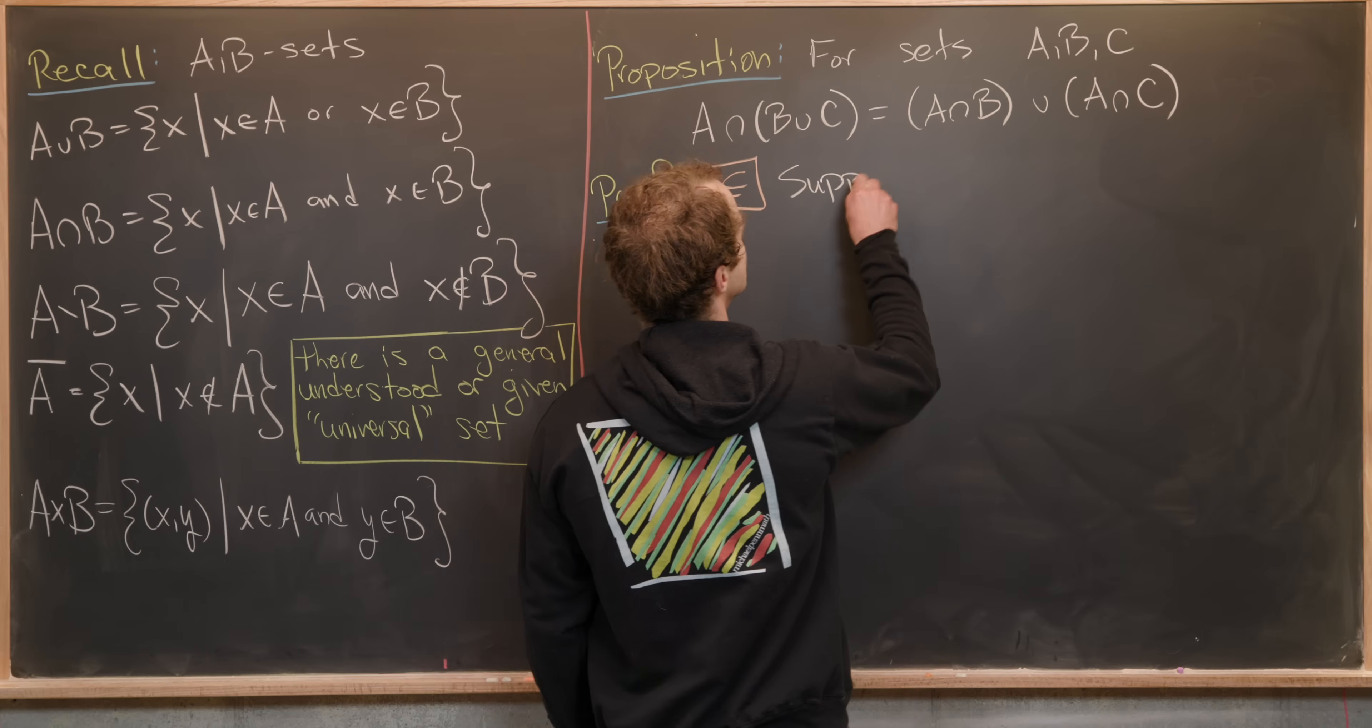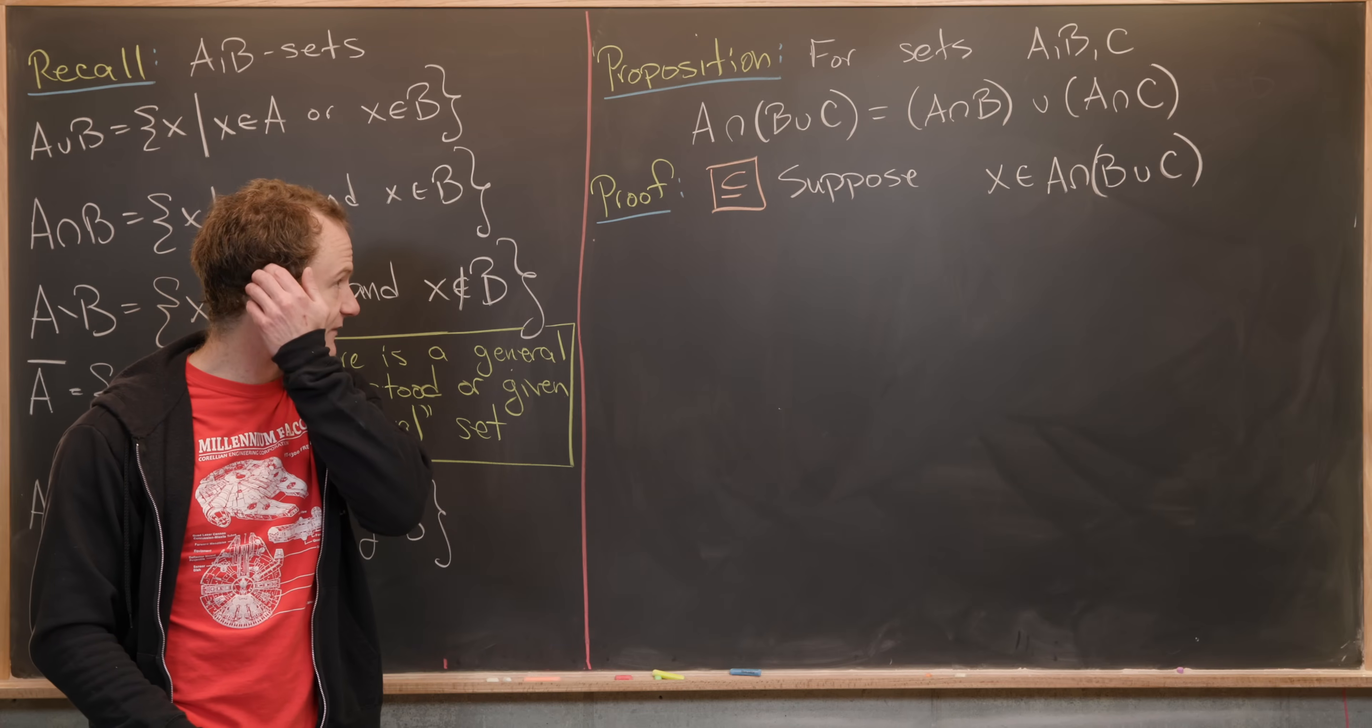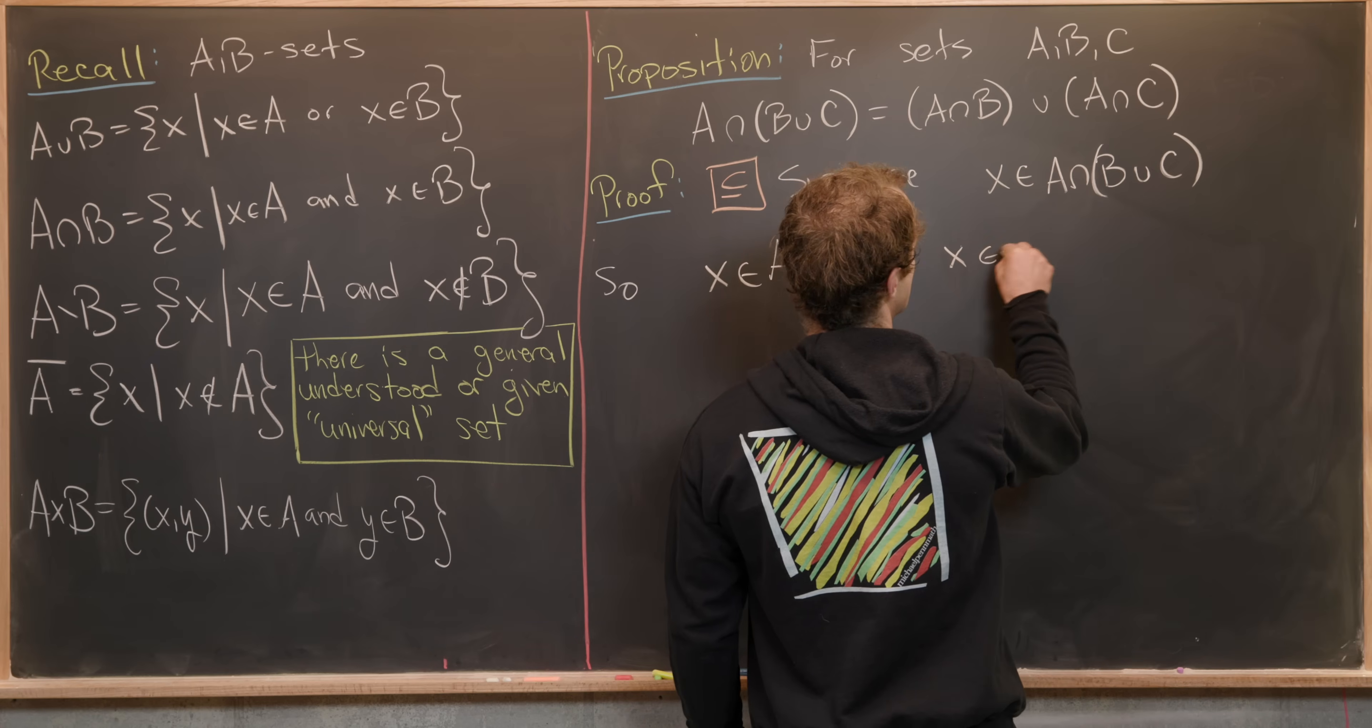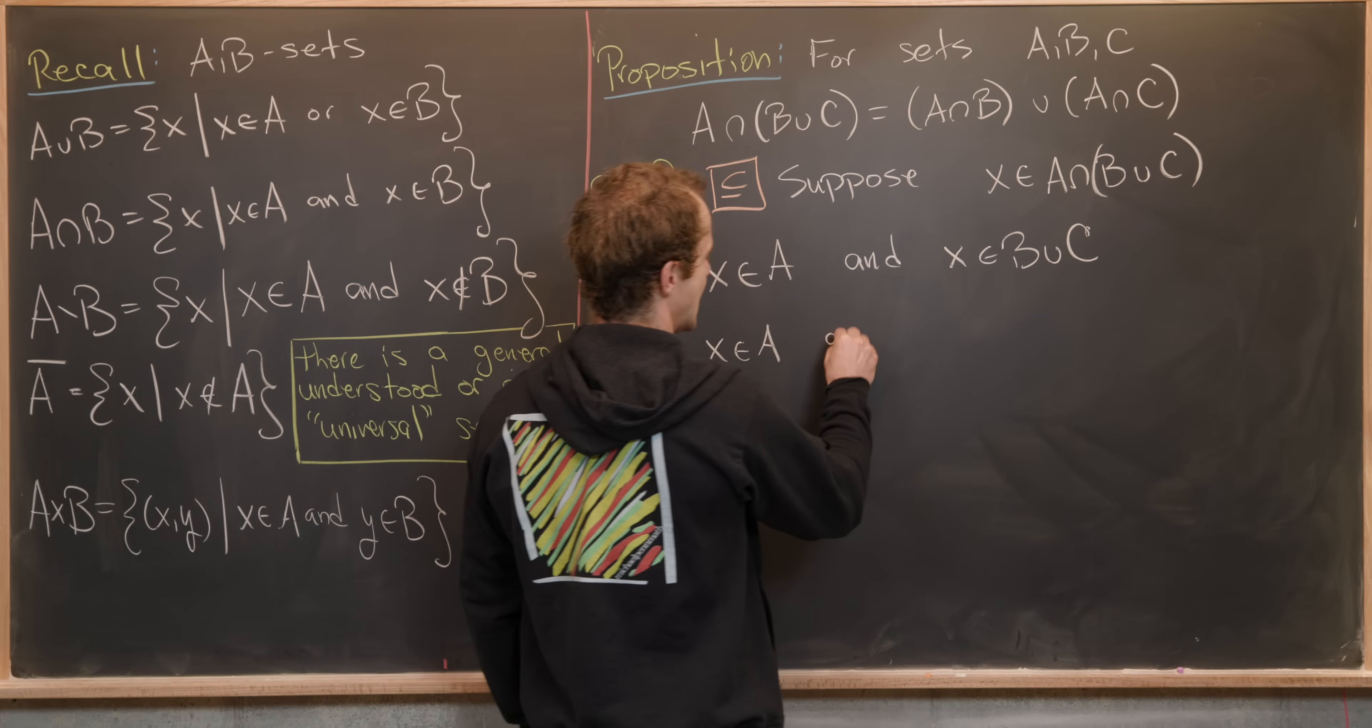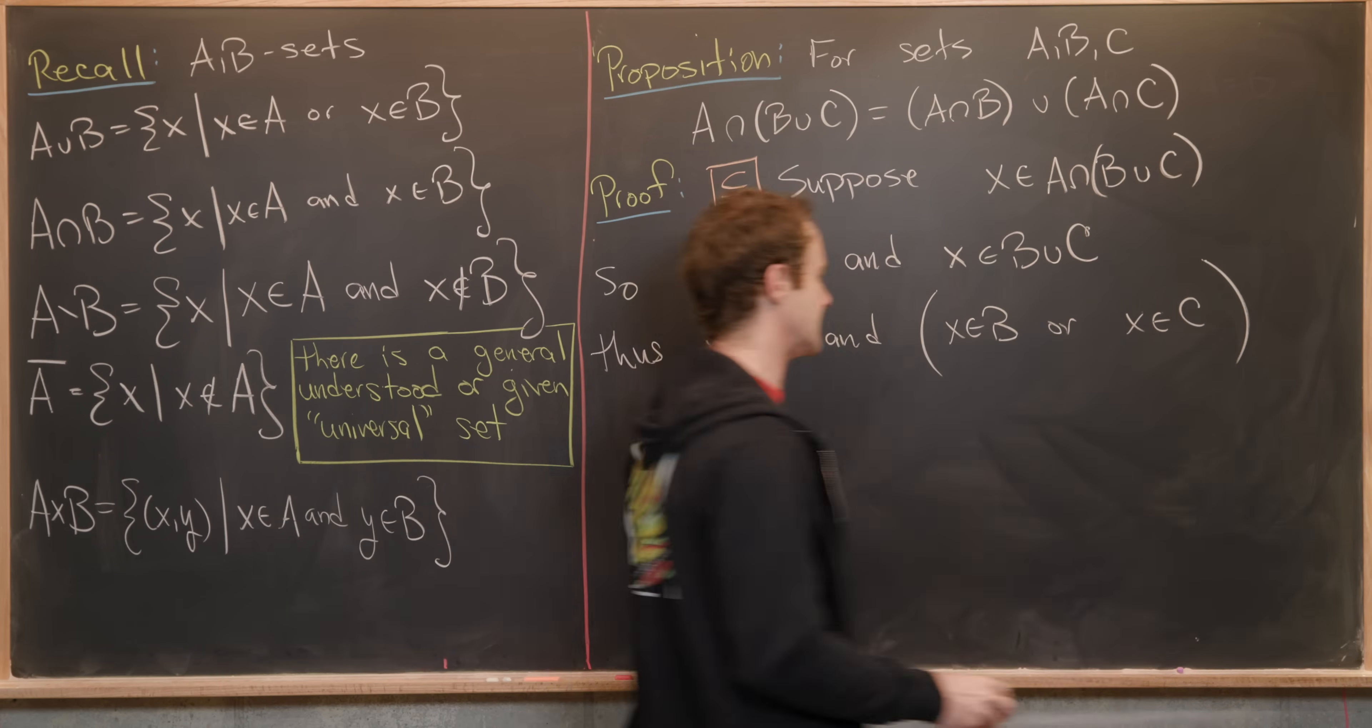Let's maybe go with this direction first, the forward direction. So let's suppose that we have an element X which is in A intersected with B union C. Now we want to unravel this from the outside to the inside via the definition of intersection and union. So what does this mean? This means that X is in A and X is in B union C. But now we can continue to unravel this. Thus, X is in A and, with this in parentheses to say that this is being acted on by this and statement, we have X is in B or X is in C.